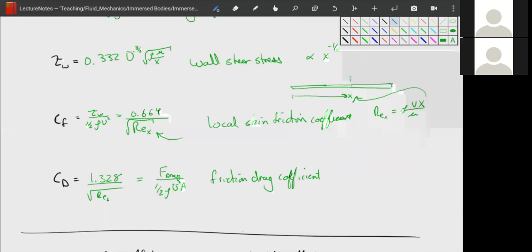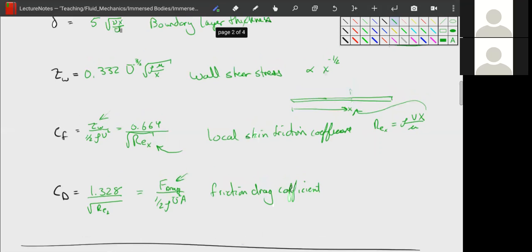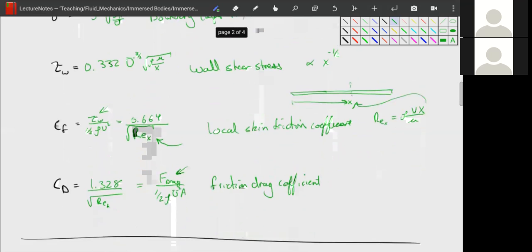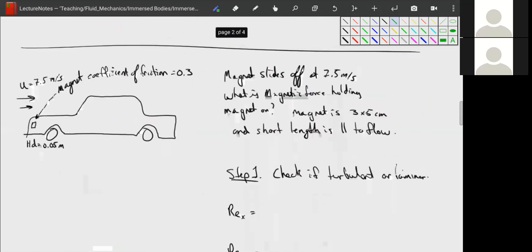And what we've done is we've integrated our skin friction coefficient from zero to L and divided by L, so we essentially took the average of the skin friction coefficient to get us the drag coefficient. Cool. So with these tools we can now calculate our drag force or the shear stress at any point on the plate. So the shear stress at any point on the plate or the drag force on the entire plate, then we can determine the thickness of the boundary layer at any point on the plate.